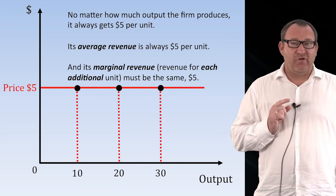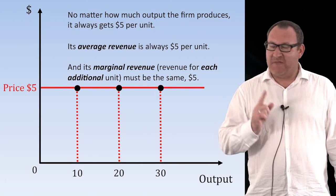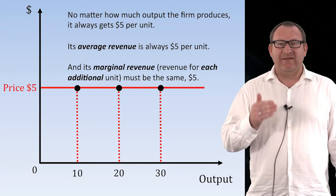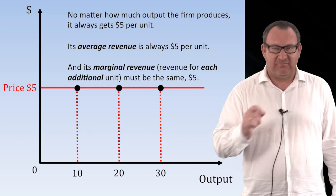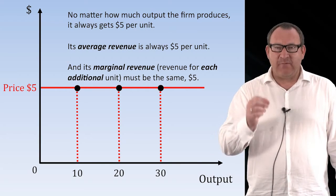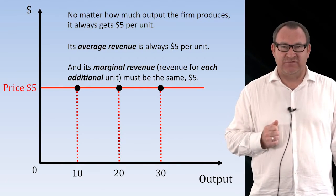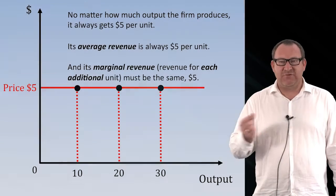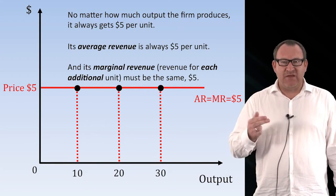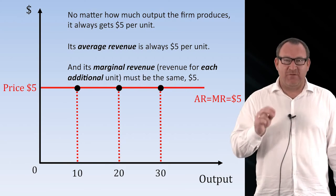If we think about the firm's marginal revenue — the revenue gained from selling an additional kilo of tomatoes — how much revenue do they make from each of those individual additional kilos? Well, if the firm's a price taker getting $5 per kilo, then the 10th kilo earns $5 marginal revenue. For the 20th kilo, they'll also be getting $5. So we know that marginal revenue will also be $5.